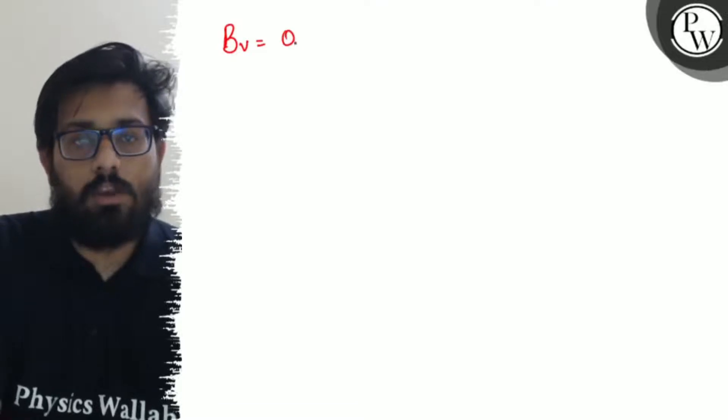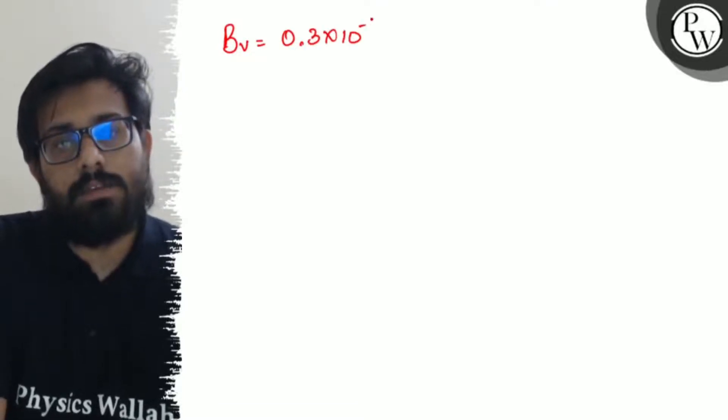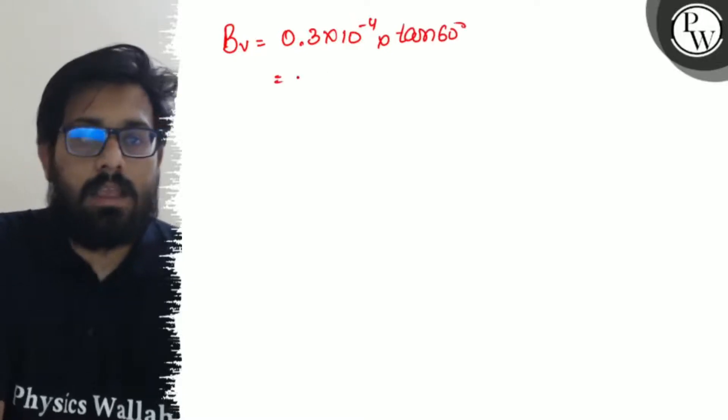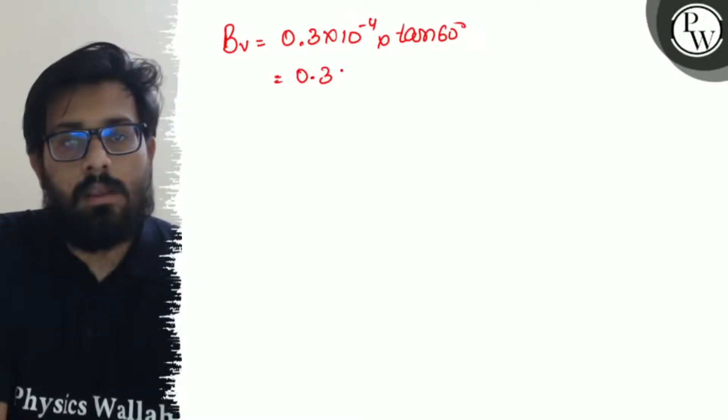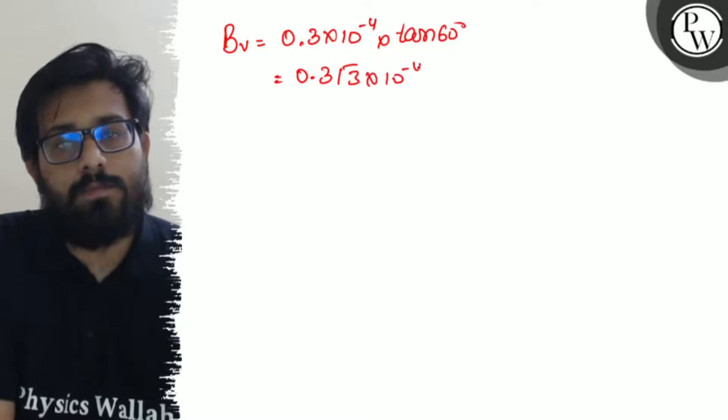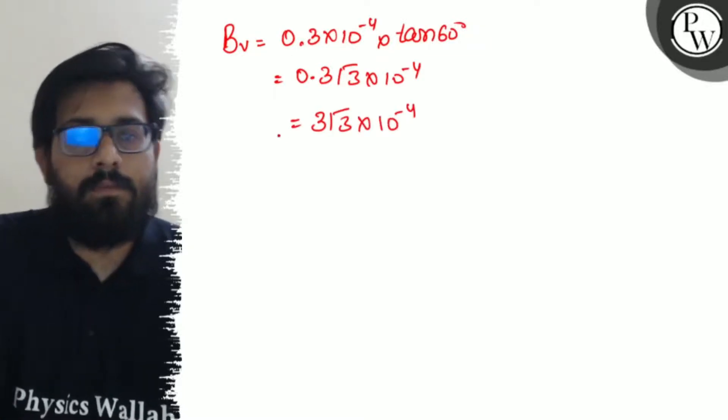So here, Bv equals 0.3×10⁻⁴ into tan 60 degrees, so this is 0.3√3×10⁻⁴, or you can say 3√3×10⁻⁵.